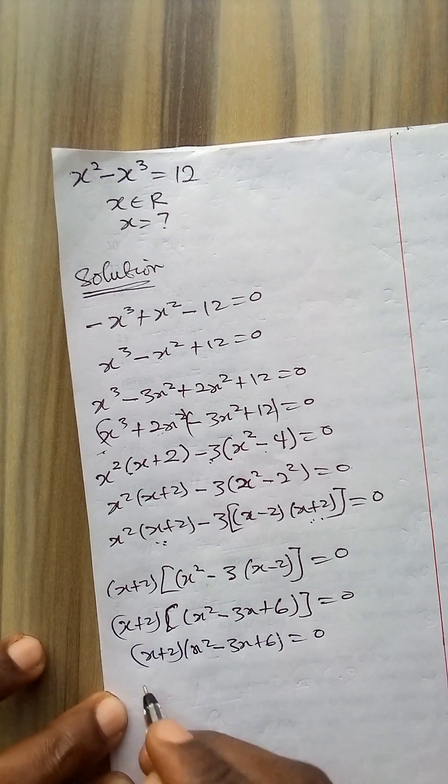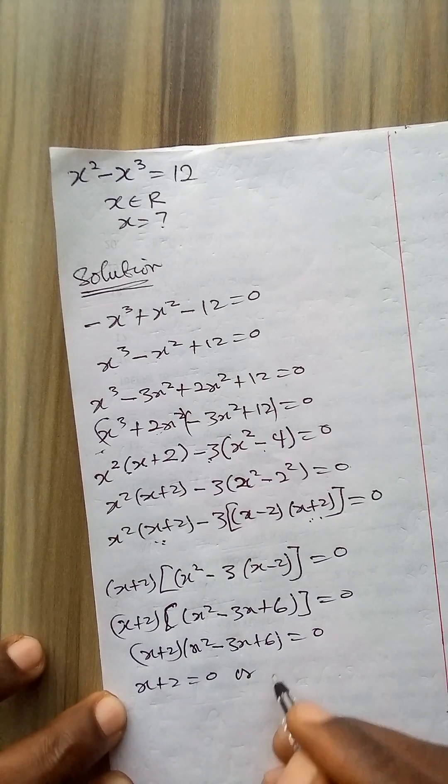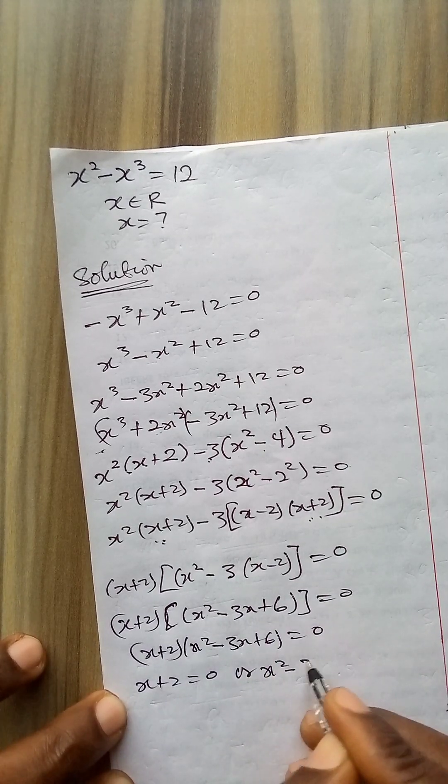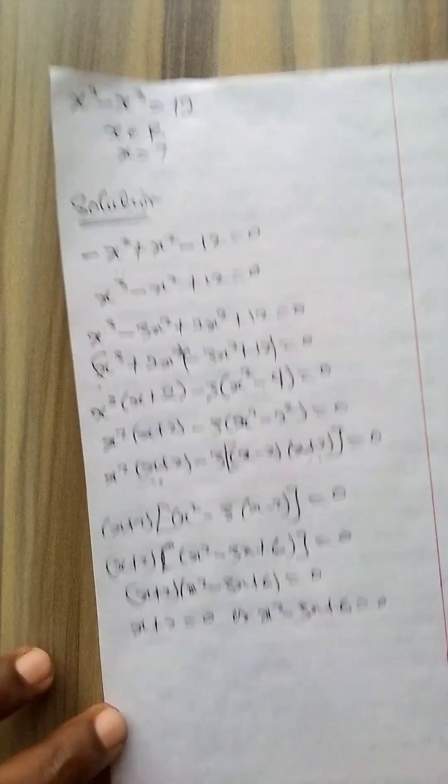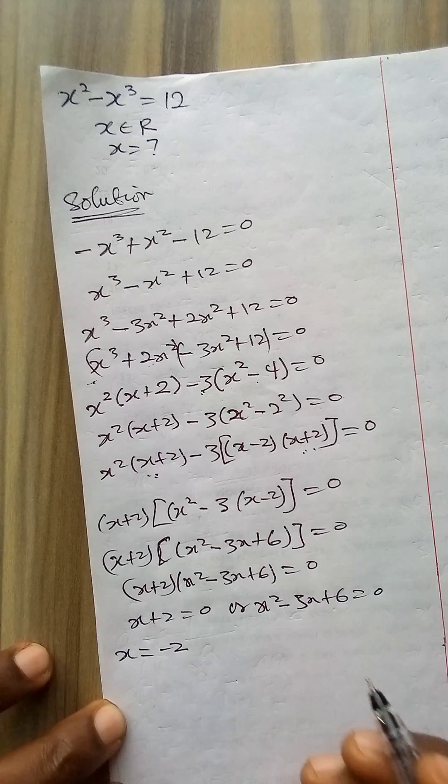So let us equate each bracket to 0. In the first case, x plus 2 is 0, or x squared minus 3x plus 6 equals 0. In the second case, this first case yields x equals minus 2 as the solution.